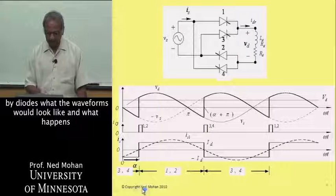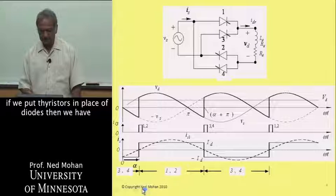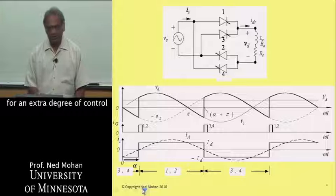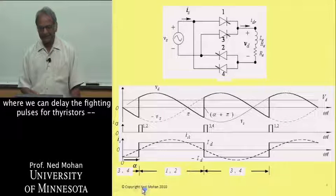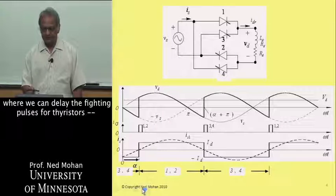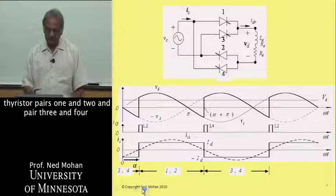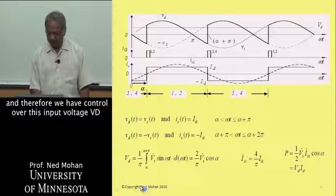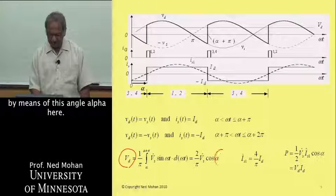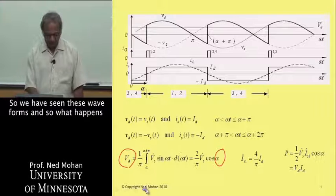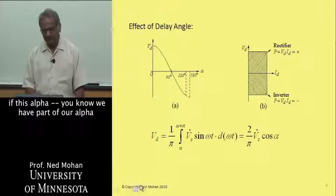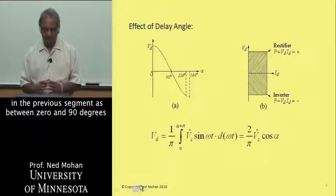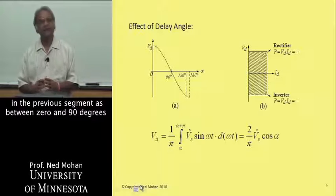What happens if we put thyristors in place of diodes? Then we have an extra degree of control where we can delay the firing pulses for thyristors — thyristor pairs 1 and 2, and pair 3 and 4. Therefore, we have control over the input voltage V-sub-D by means of this angle alpha. We have seen these waveforms, and so what happens if this alpha — we have thought about alpha in the previous segment as between 0 and 90 degrees.